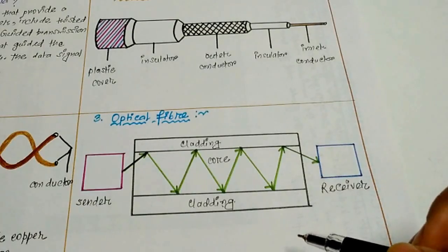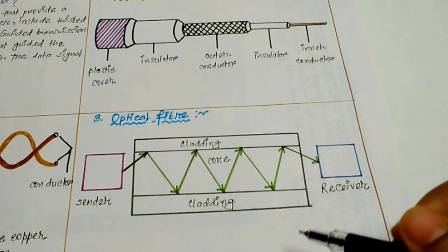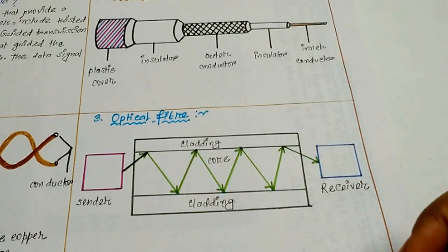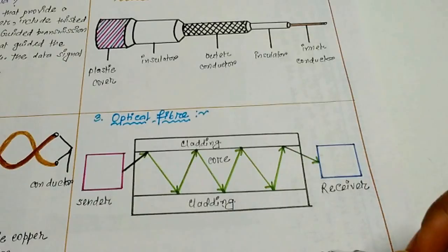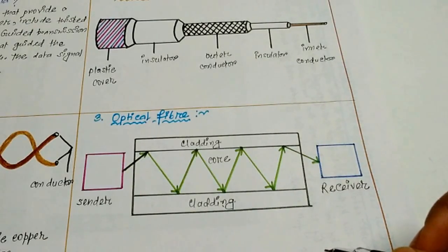The optical fiber are two types. Step index fiber: the density of the core remains constant from center to edges. And the second is graded index fiber where the density is highest at the center of the core and decreases gradually to its lowest at the edge.